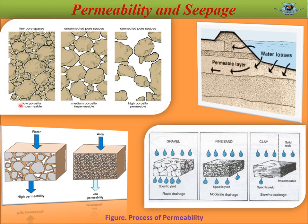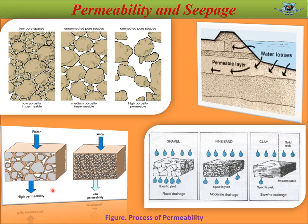This figure represents the process of permeability. The soil will be impermeable and have low porosity if there exist few porous spaces. The soil will be impermeable and have medium porosity if the porous spaces are unconnected. Soil permeability is the rate at which water and air move from upper to lower soil layer. In the case of high porosity, the permeability will be high, and in the case of low porosity, the permeability will be low.